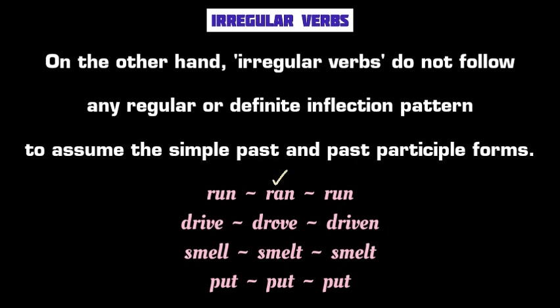For example, the verb 'run' inflects as 'ran' in simple past tense with a change of vowel from u to a, but remains 'run' in past participle form. The verb 'drive' becomes 'drove' in simple past tense and 'driven' in past participle form. 'Smell' is inflected as 'smelt' in both simple past and past participle forms. The verb 'put' does not undergo any change either in past or past participle form. These four verbs do not follow any standard or regular inflection pattern — hence they are examples of irregular verbs.